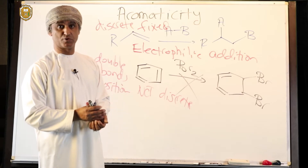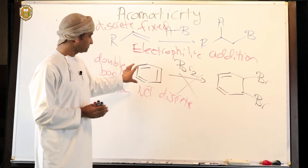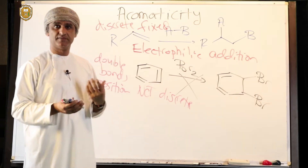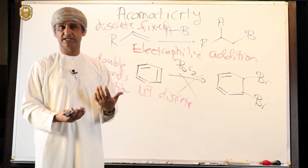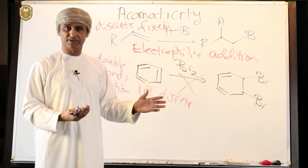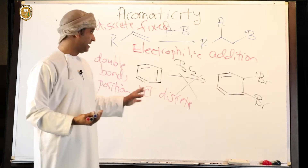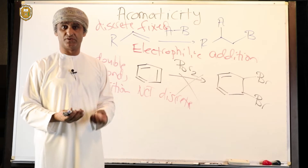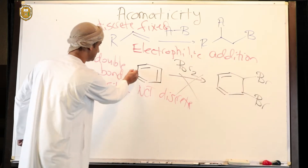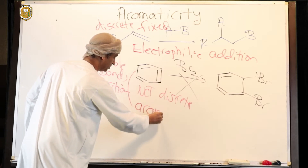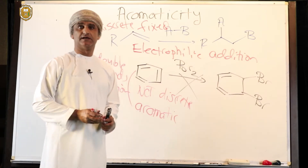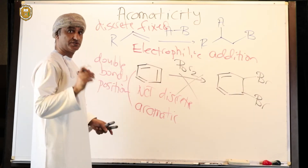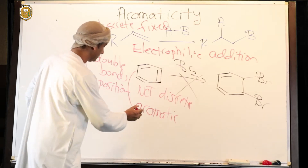The positions of the double bonds inside the benzene ring are not fixed or discrete. Therefore, in a way, they are invisible to incoming electrophiles. That is why electrophiles cannot react with benzene without catalysis. The positions of double bonds are not visible or discrete, and therefore benzene does not undergo the reactions that alkenes undergo. This fact is due to the aromaticity of benzene. Aromaticity induces stability, so benzene is very stable to electrophiles under no catalysis. Benzene is aromatic.